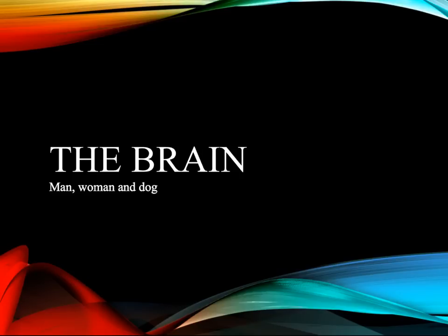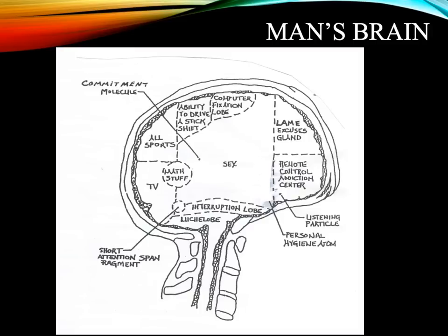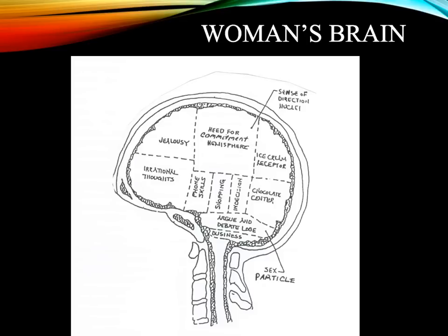Before we begin getting into all the scientific analysis and before we start diving into the intricacies of the brain, let's first have a little fun. Let's look at a man's brain, a woman's brain, and a dog's brain, and let's see if you can tell the difference. So here's a man's brain. You might want to pause the video so you have time to look it over and see if you can tell the difference between the man's brain and the woman's brain. Here's the woman's brain. Notice that the sex region in the man's brain is much larger than that of the female. Also, compassion, jealousy, and other commitment regions of the brain are much larger in the female than in the male.